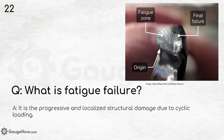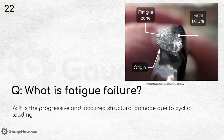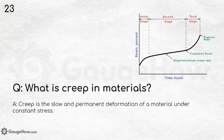What is fatigue failure? It is the progressive and localized structural damage due to cyclic loading. In the image, the final failure point, fatigue zones, and the origin where it all started are indicated. What is creep in materials? Creep is the slow and permanent deformation of a material under constant stress. The graph is important — it defines how creep occurs and shows the rupture point where creep actually takes place.